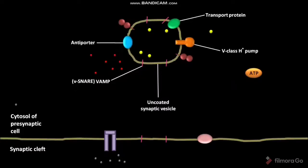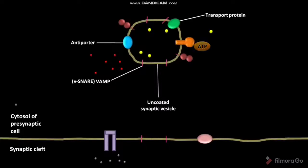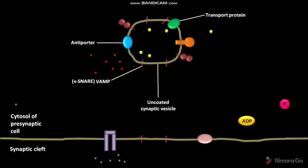During the process of cycling of neurotransmitters and synaptic vesicles in axon terminals, first of all, the ATP present in the cytosol of the presynaptic cell binds to the V-class proton pump. The V-class proton pump then catalyzes the hydrolysis of ATP to form ADP and Pi. The ADP and Pi are released into the cytosol of the presynaptic cell, and the cytosolic H+ ion or proton then passes through the V-class proton pump into the lumen of the uncoated synaptic vesicle. These red colored dots are neurotransmitters.